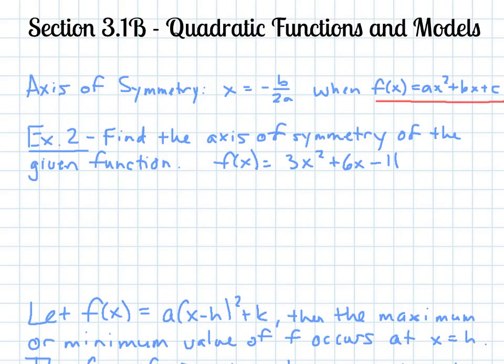For example 2, I just want to find the axis of symmetry given the function, so f of x equals 3x squared plus 6x minus 11. So here to find my axis of symmetry, my negative b value would be the opposite of the 6, so negative 6, and then divided by 2 times my a, which is 3. So then I get negative 6 divided by 6, which will be negative 1.